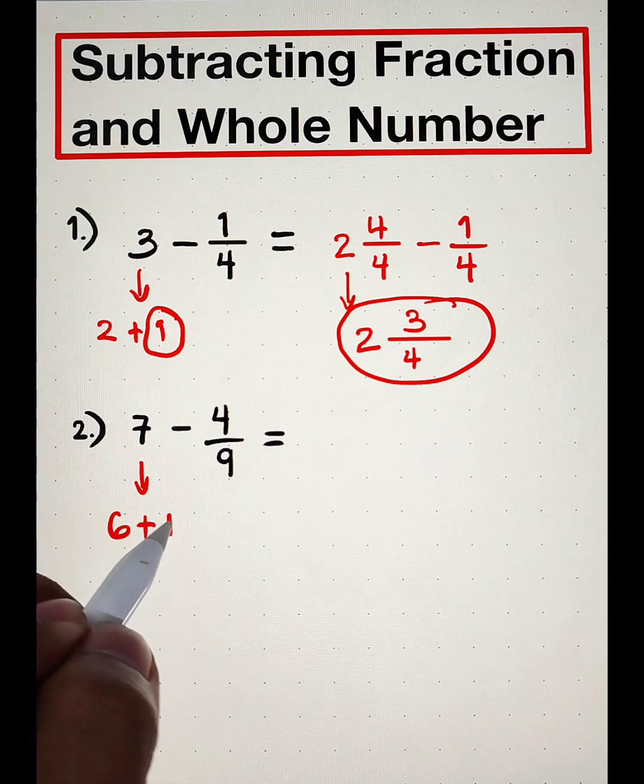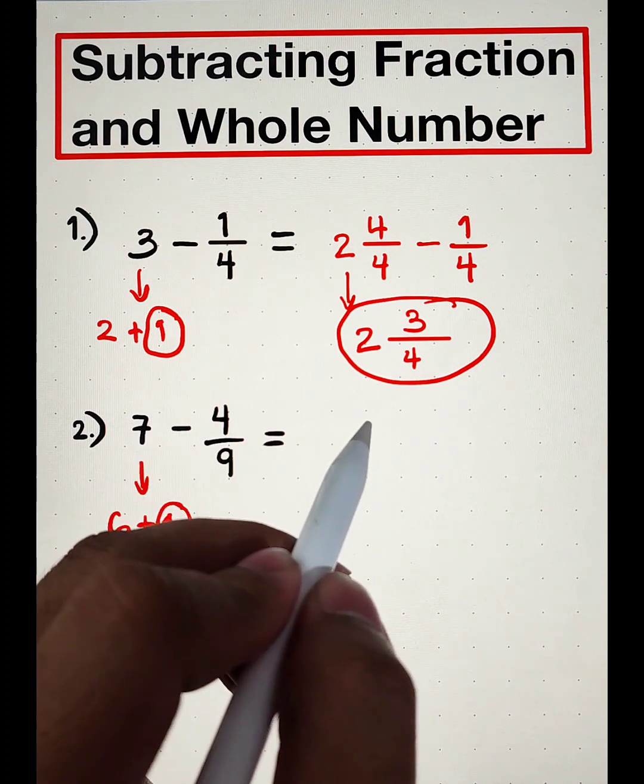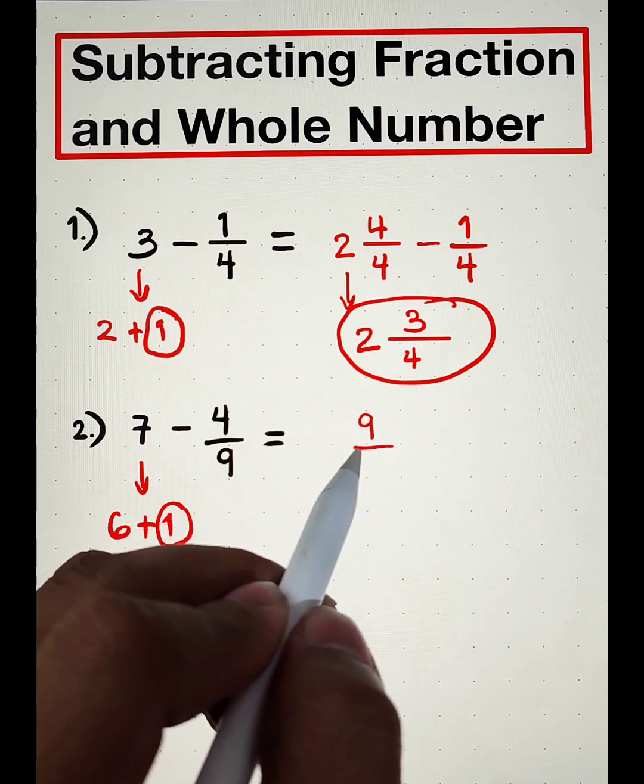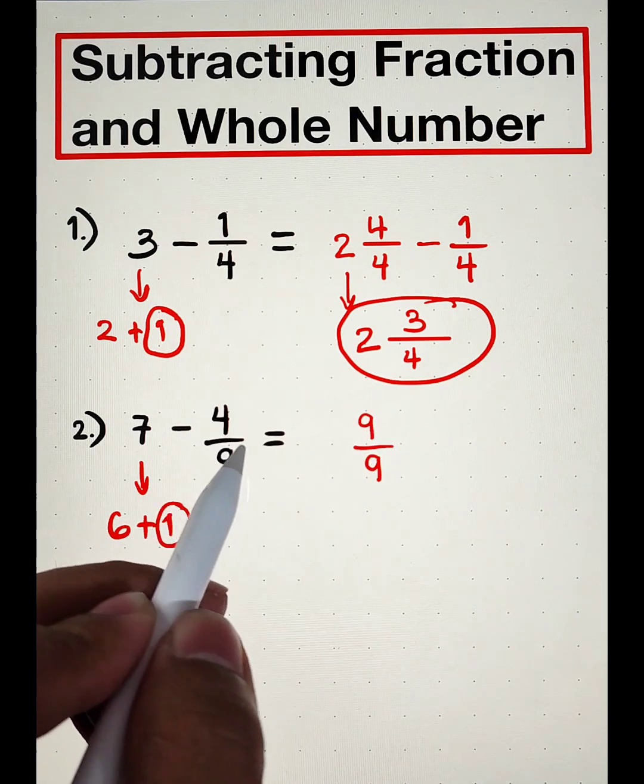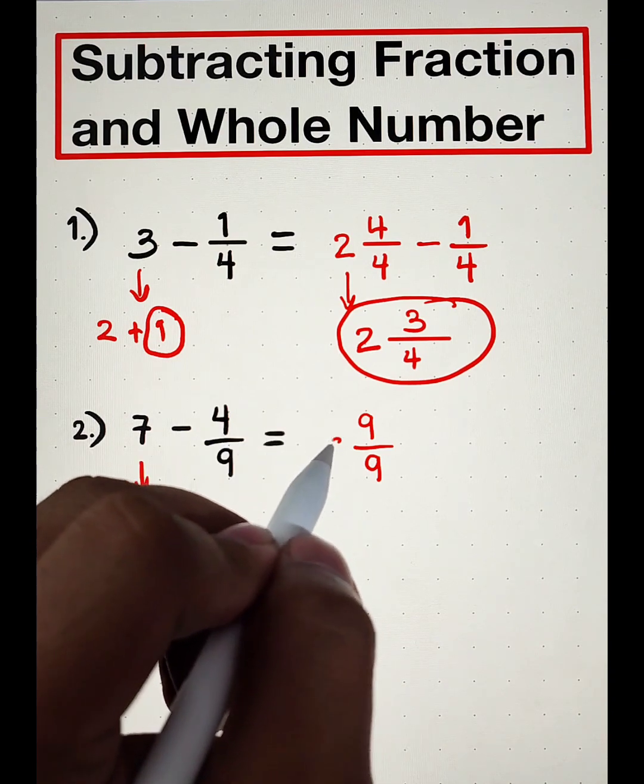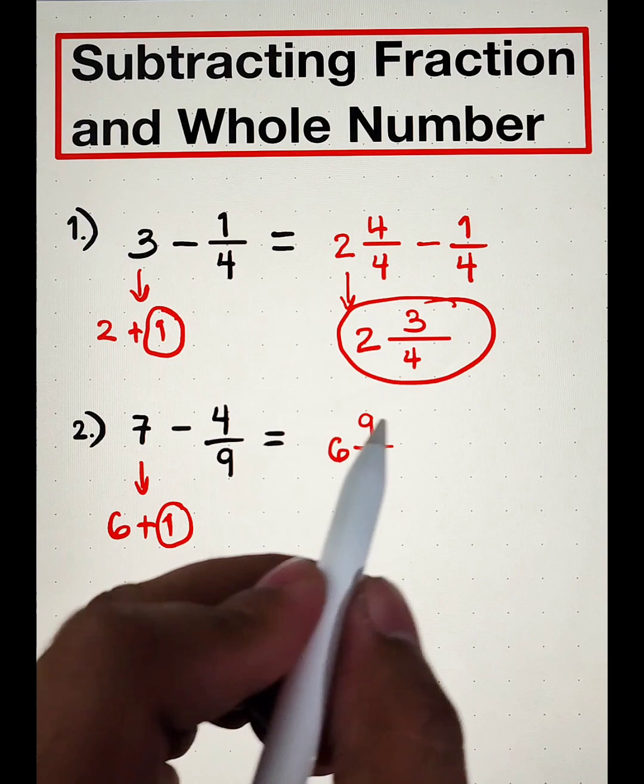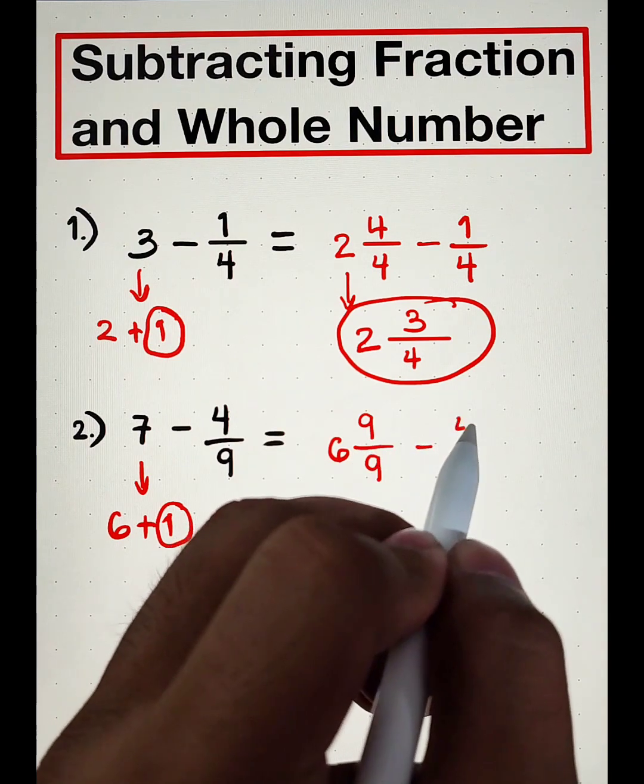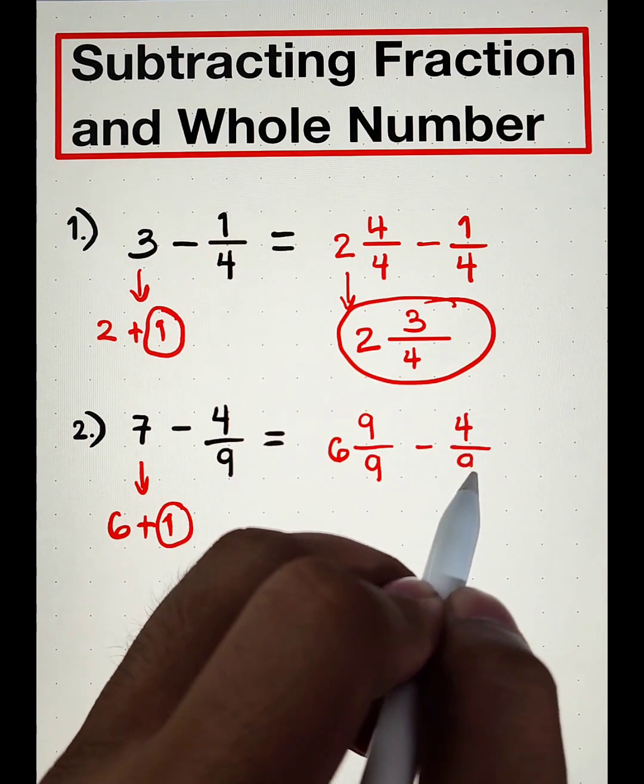6 plus 1. This whole number 1 will become 9 over 9 because of your denominator 9. And then attach the whole number 6. Copy minus 4 over 9.